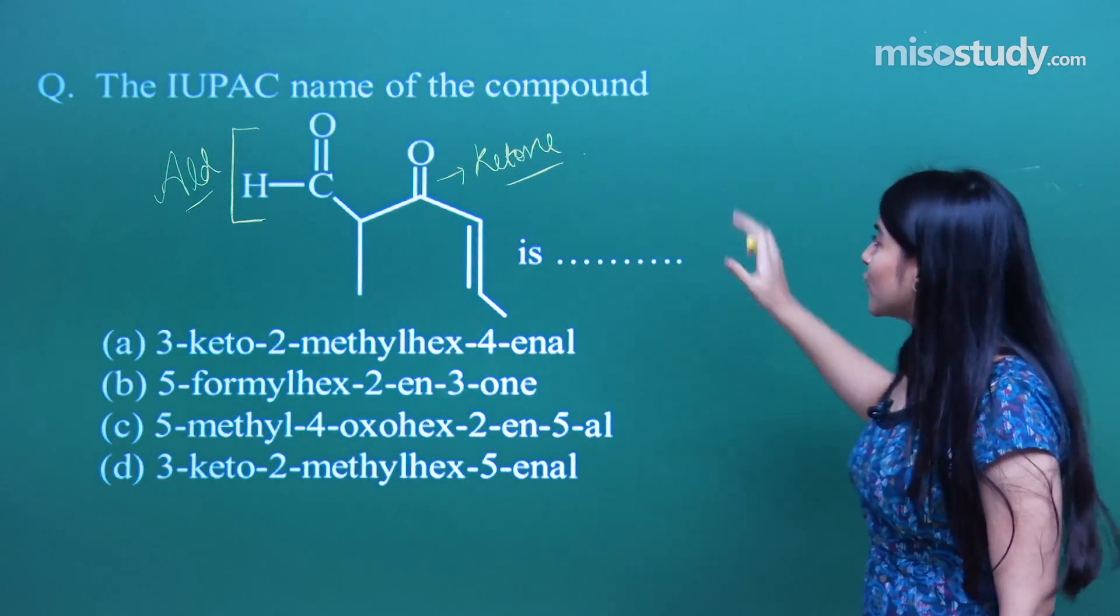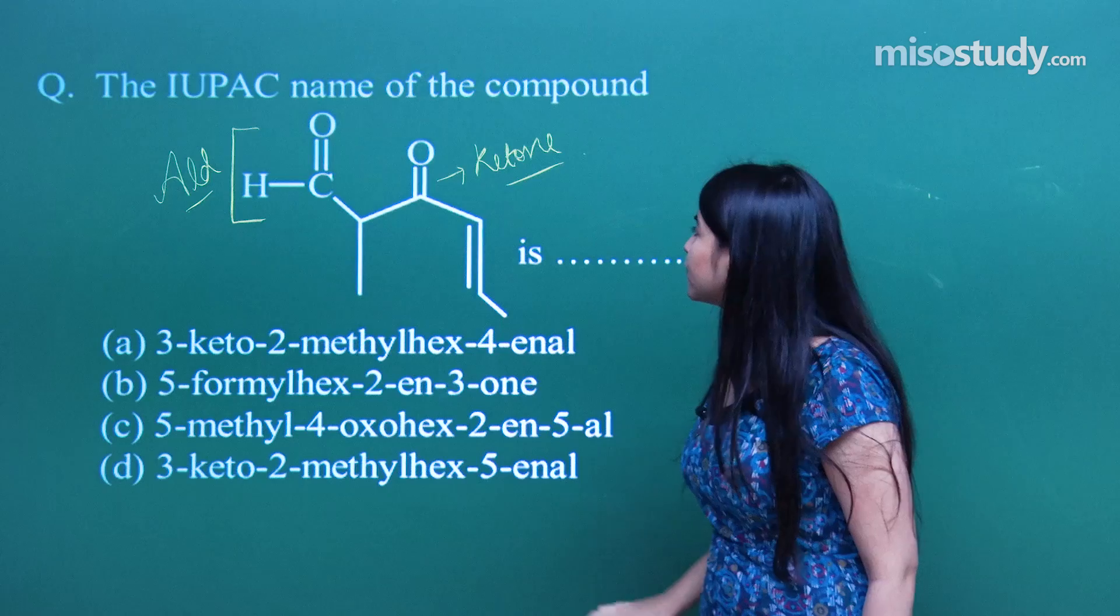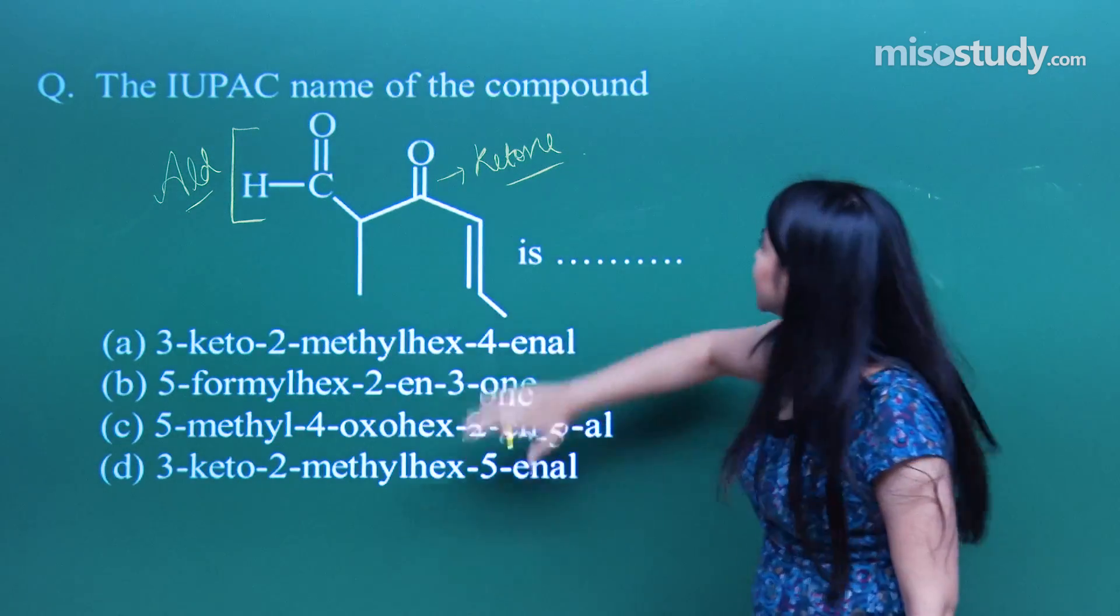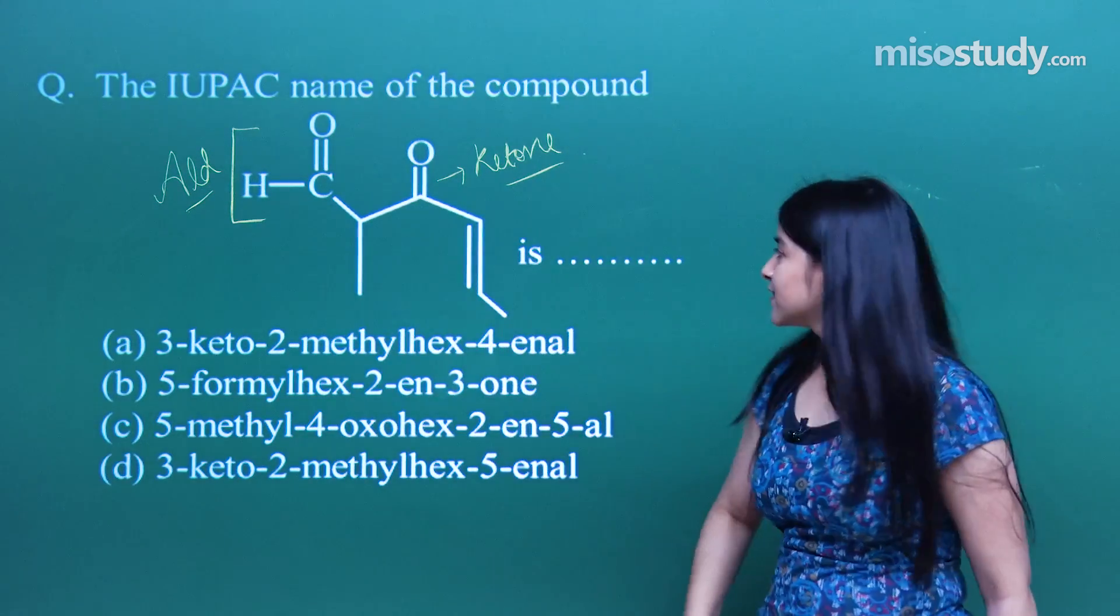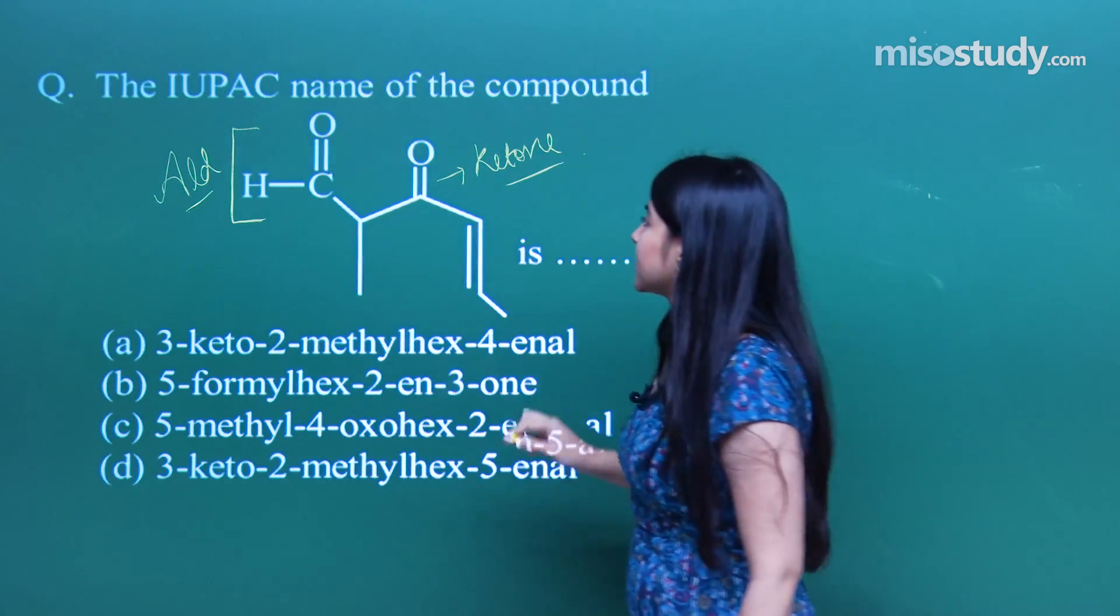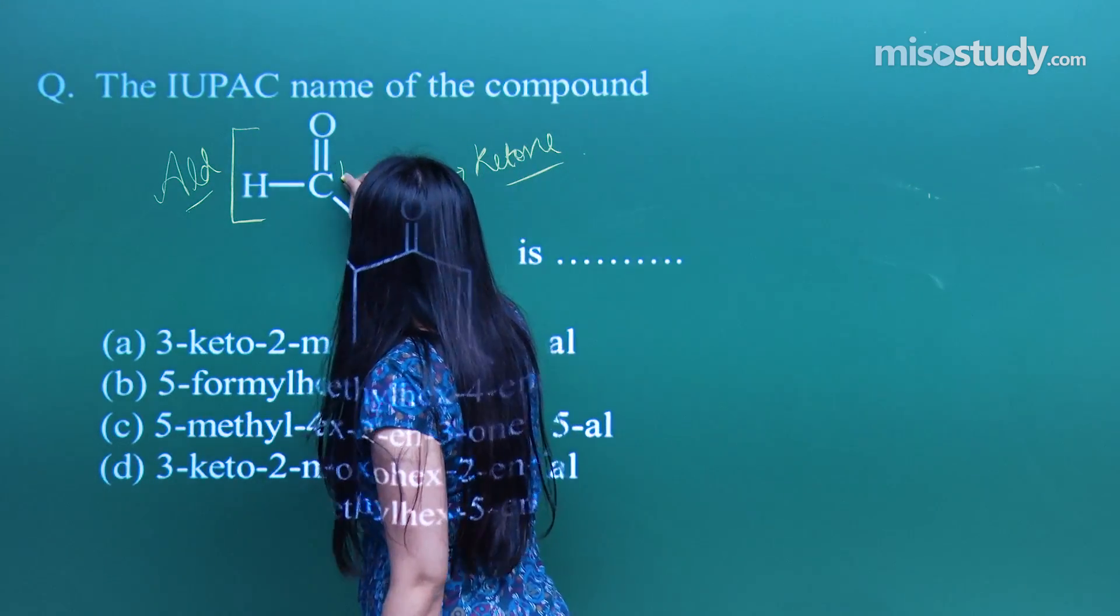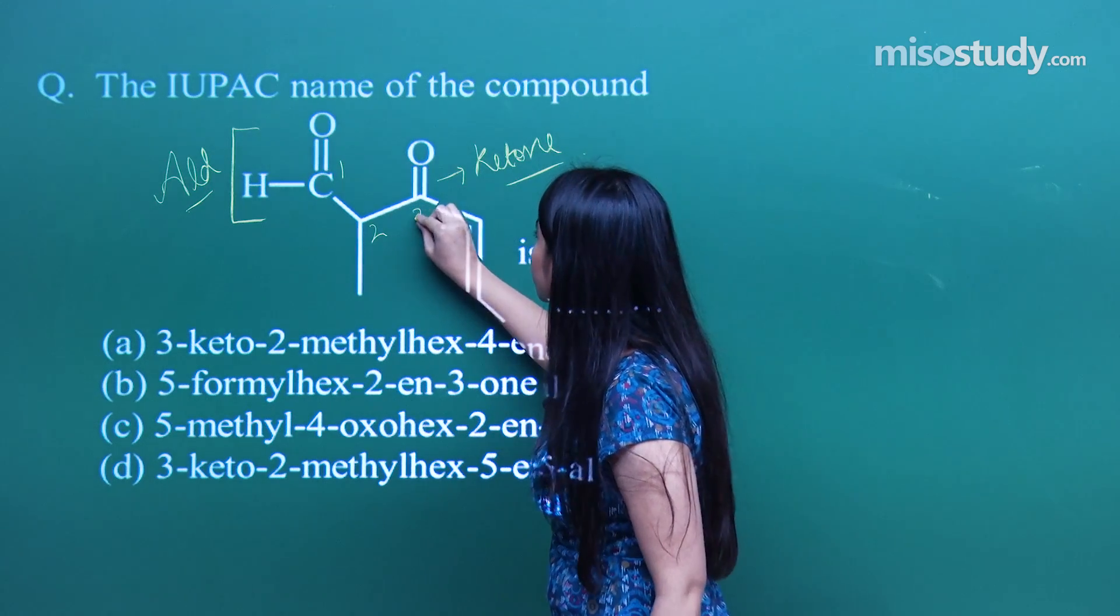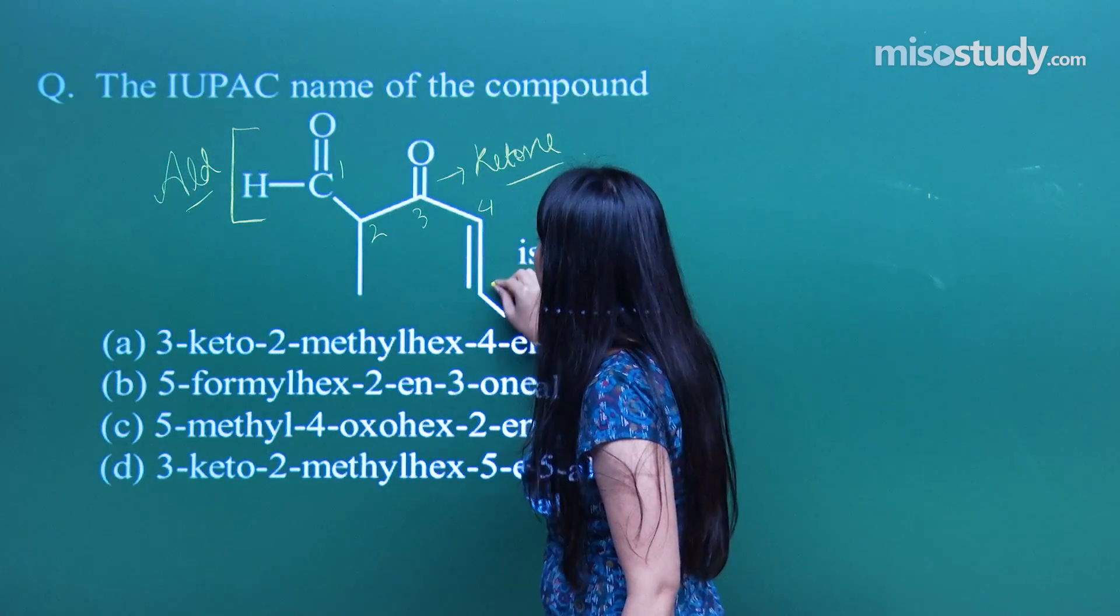As per the rap, I have to number this aldehyde first, this ketone as second, and this as third. So in that case, if I'm trying to number it here as one, two, three, four, and five, and finally six.